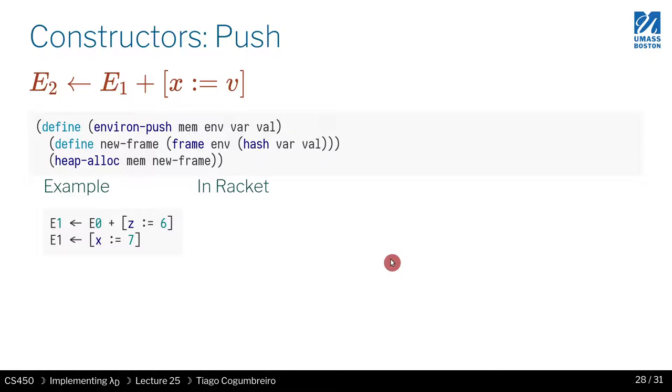You could put it into two different lines as well, but because the environment put always returns a new memory, you can chain these two together. Now for constructor push: